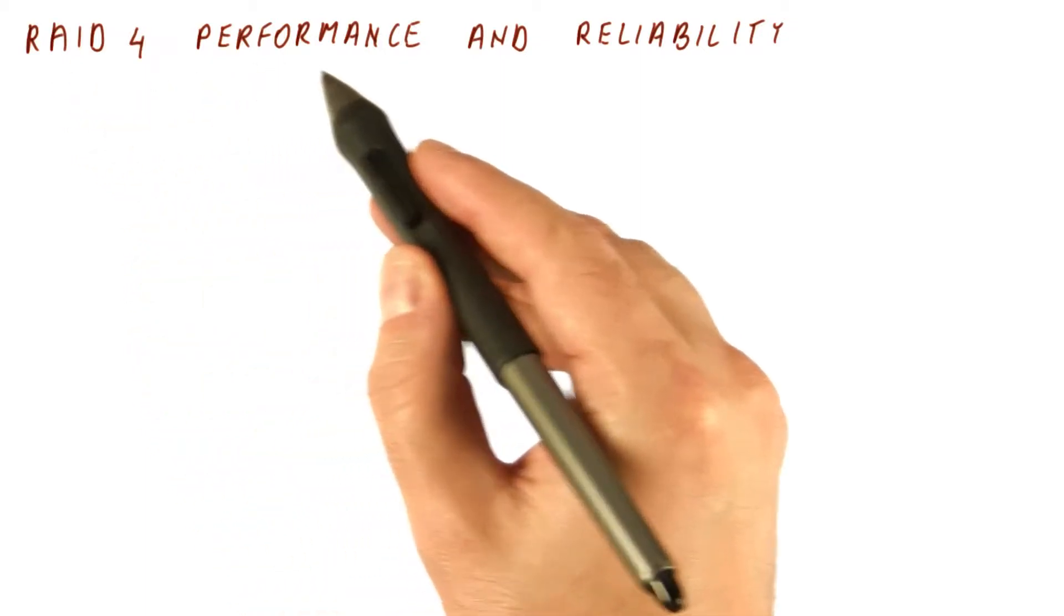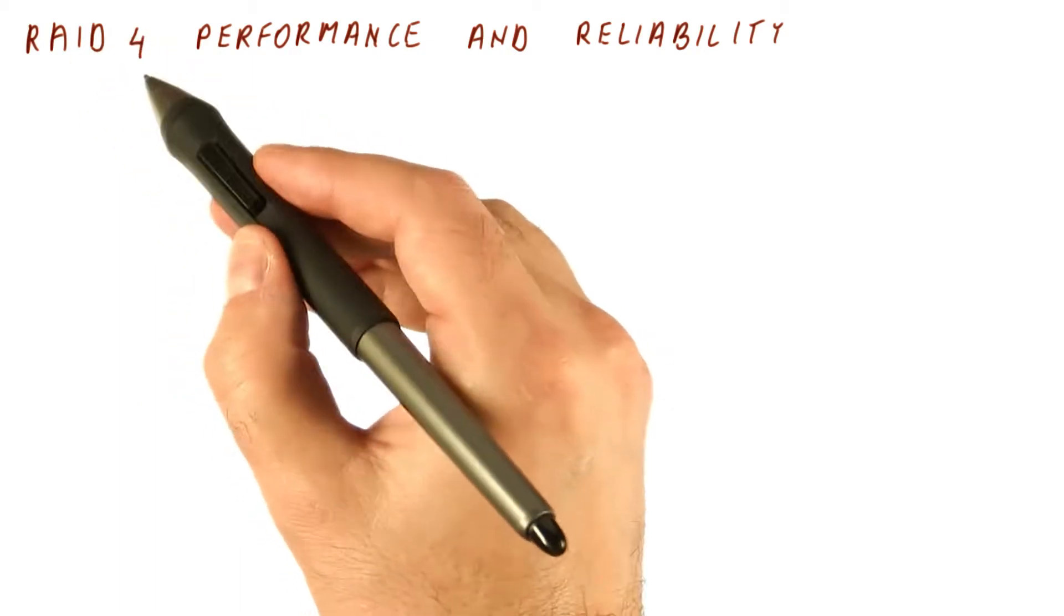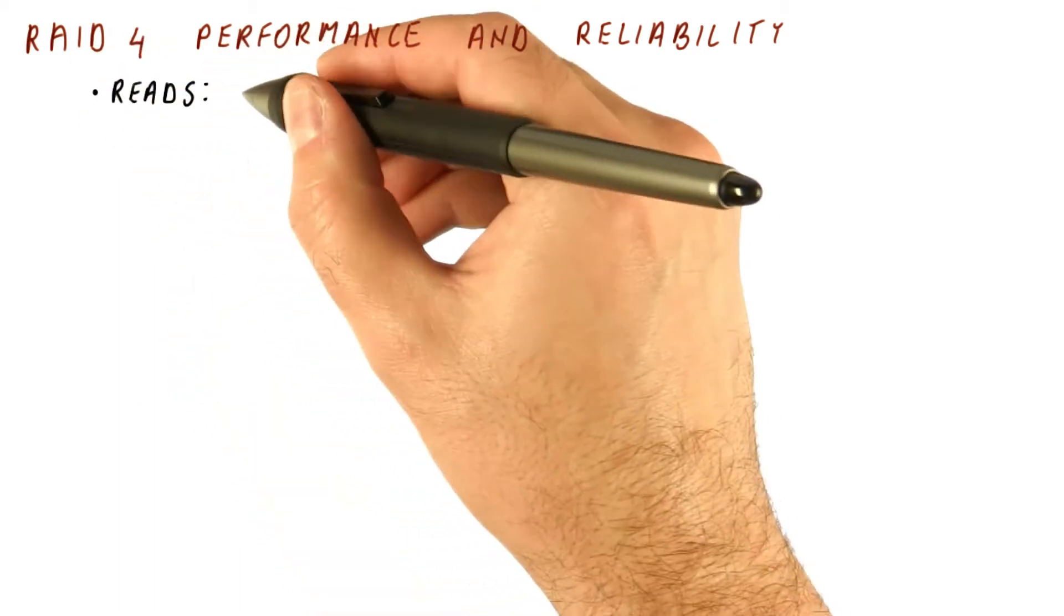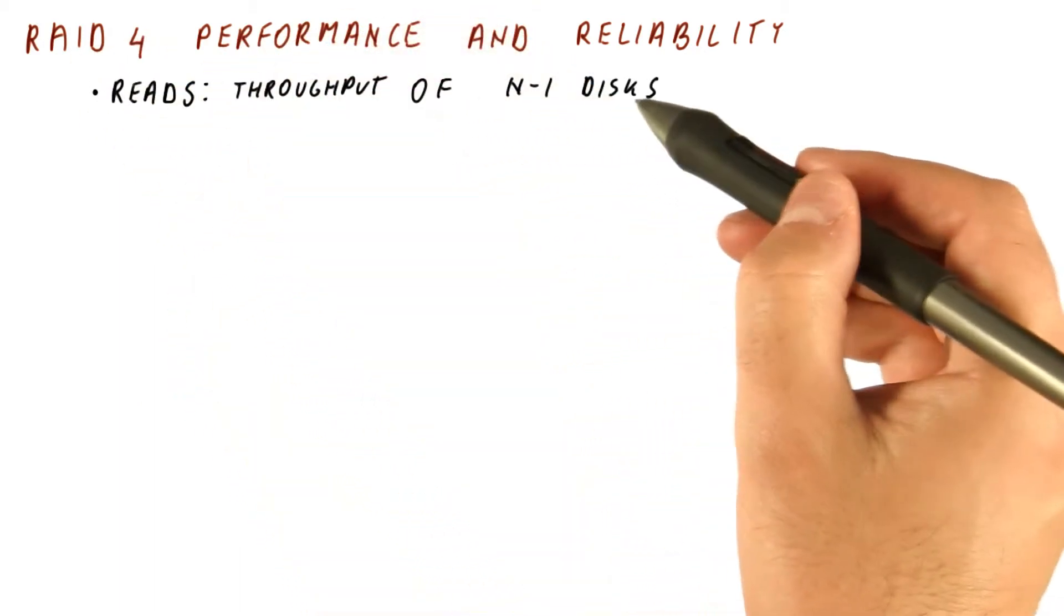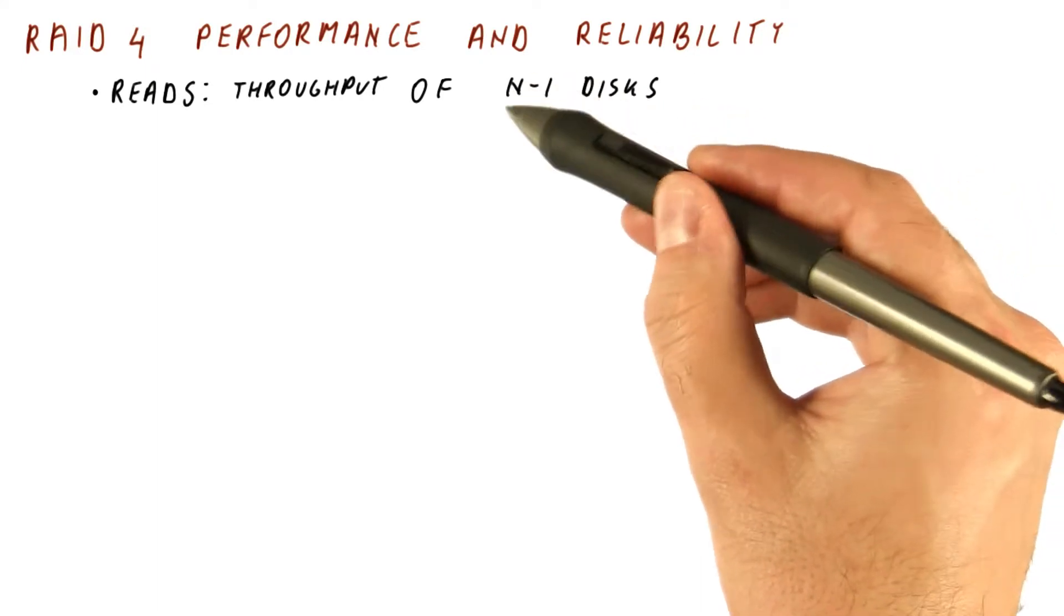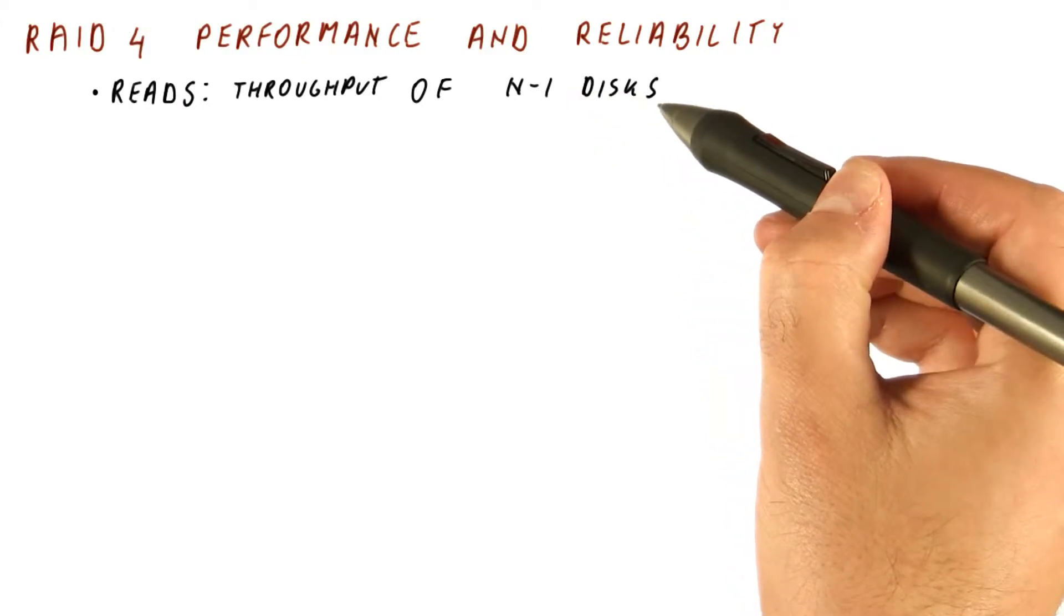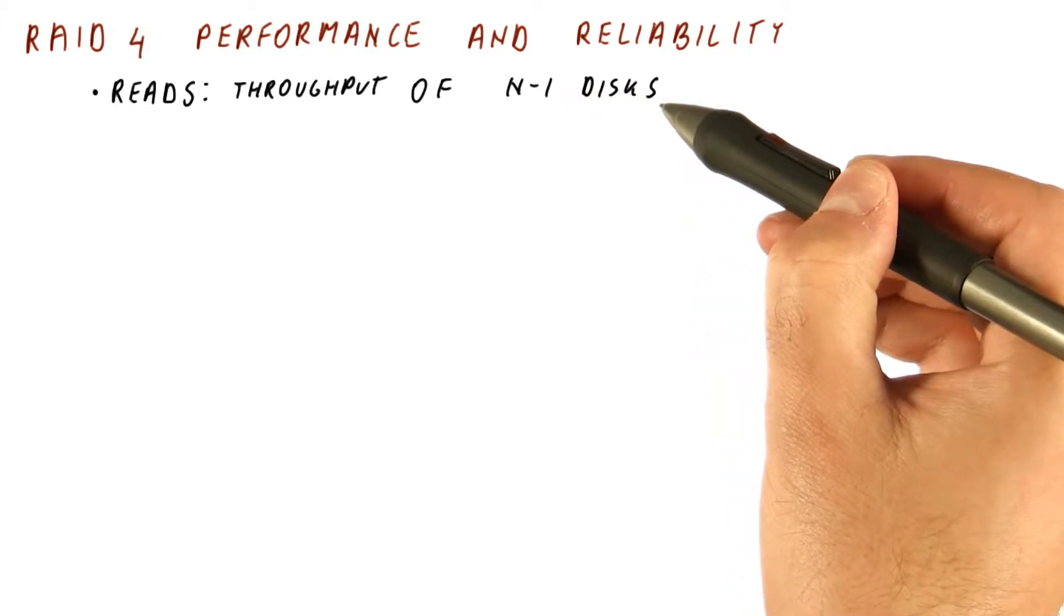So let us look now at the overall performance and reliability of a RAID4 array. For reads, we are getting on average the throughput of n minus 1 disks. We can read data from all of the data disks, but the parity disk has no useful data on it, so for reads we don't use it.